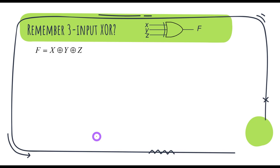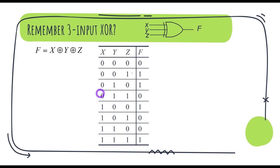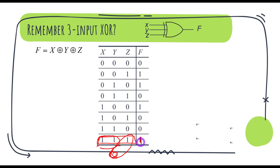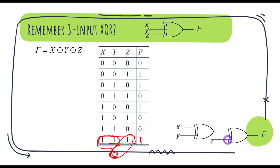What we need is a three-input XOR gate. In its truth table, you evaluate the first two inputs X and Y together. Since X and Y are the same, the answer is zero. Then that zero and the third input Z — which is one — are different, so the answer is one. You evaluate the first two inputs together, then take that result with the third input.